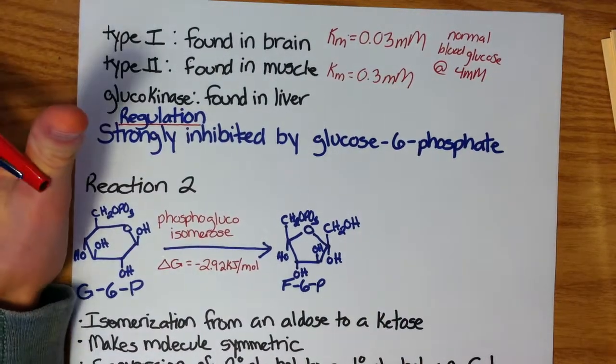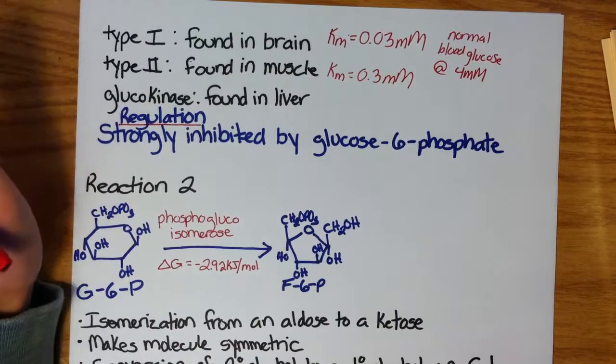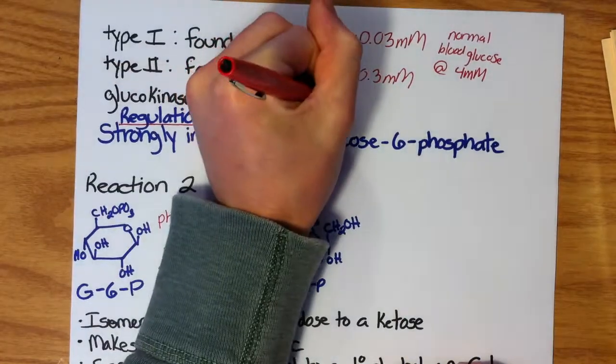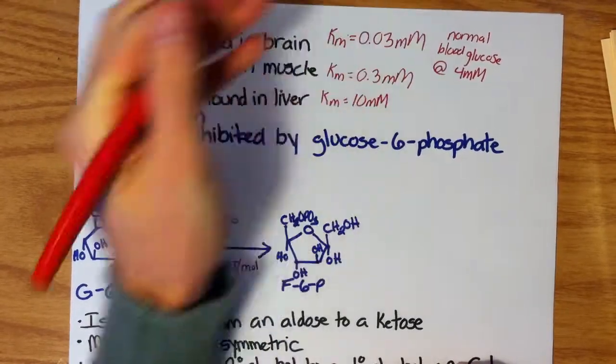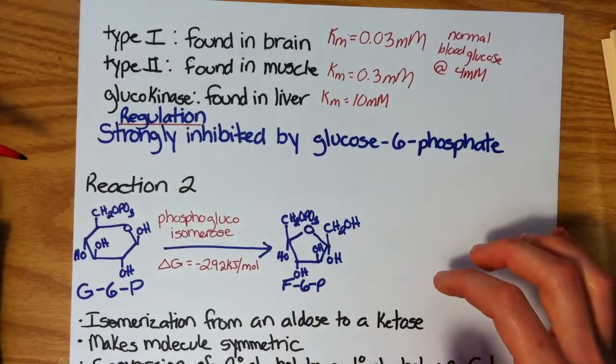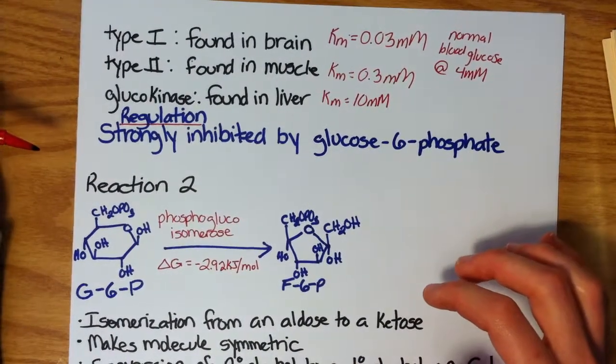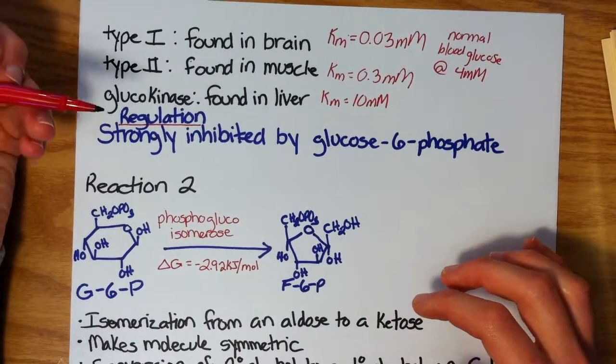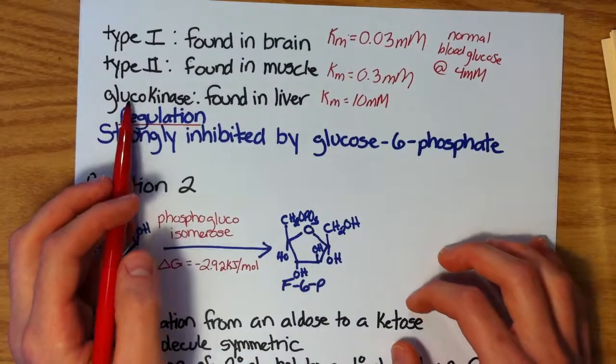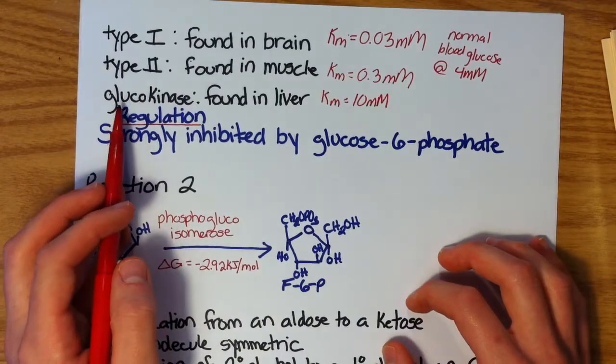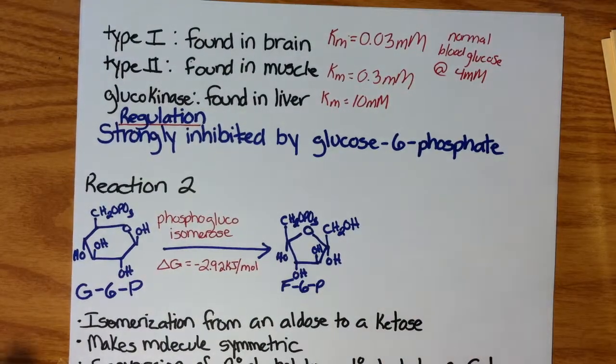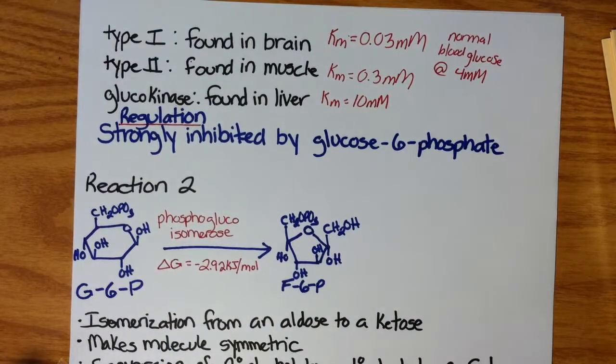Now something that's a bit different is glucokinase. Glucokinase is found exclusively in the liver. Its Km is 10 millimolar. So this enzyme isn't nearly as active as the hexokinase enzymes are, and only is active when glucose levels are extremely high in the body. And in fact, the glucose 6-phosphate born by glucokinase doesn't continue down glycolysis. It actually goes to form glycogen. It's stored energy.